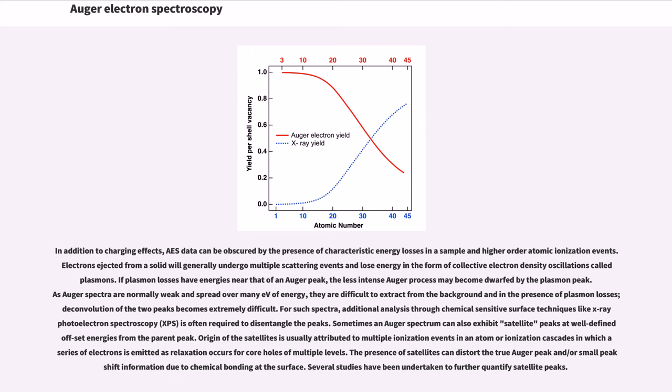In addition to charging effects, AES data can be obscured by the presence of characteristic energy losses in a sample and higher order atomic ionization events. Electrons ejected from a solid will generally undergo multiple scattering events and lose energy in the form of collective electron density oscillations called plasmons. If plasmon losses have energies near that of an Auger peak, the less intense Auger process may become dwarfed by the plasmon peak. As Auger spectra are normally weak and spread over many eV of energy, they are difficult to extract from the background and in the presence of plasmon losses, deconvolution of the two peaks becomes extremely difficult. For such spectra, additional analysis through chemical-sensitive surface techniques like X-ray photoelectron spectroscopy (XPS) is often required to disentangle the peaks.